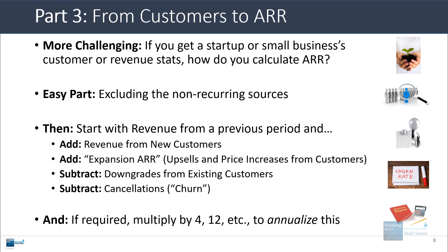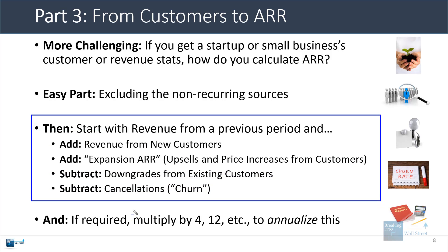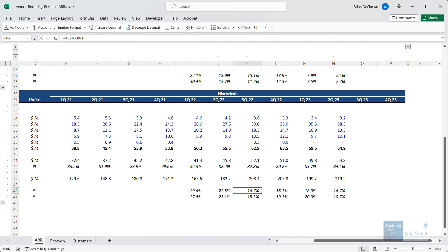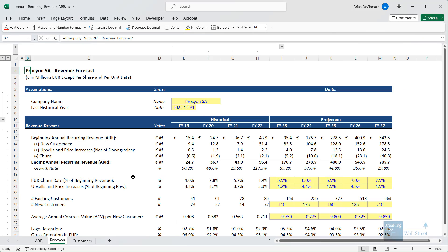At the end you get to your number for the period. If this is a monthly or quarterly number, you can multiply it by 4 or 12 to annualize it. But if you're already working with annual numbers, then you don't need to do this — you're already effectively getting the annual or annualized number. I have an example here for a fictional company called Procyon, this enterprise software company based in Europe. You can see how the build works: we start with the beginning annual recurring revenue, add revenue from new customers, add the upsells and price increases net of downgrades, and then subtract the churn or cancellations.